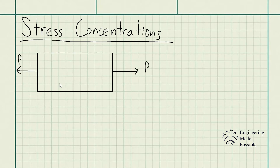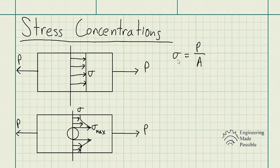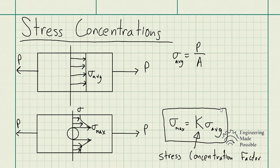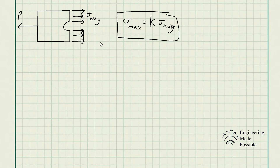Today we'll be going over what's called stress concentrations. Let's say we have a rectangular plate with an external load P being applied, so this rectangular plate is in tension. If you were to calculate the stress right at the center of this bar, you could draw the stress concentrations and solve for the stress. The stress is equal to the external load divided by the cross-sectional area of this plate.